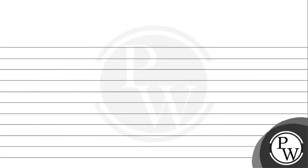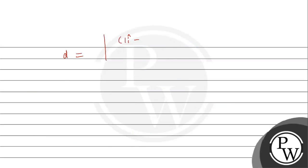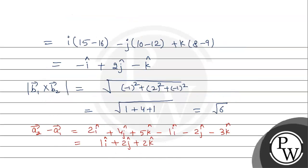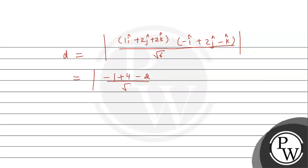Now we can easily find the distance. D = |(A2 − A1) · (B1 × B2)| / |B1 × B2|. Taking the dot product: (1i cap + 2j cap + 2k cap) · (−i cap + 2j cap − k cap) = (1)(−1) + (2)(2) + (2)(−1) = −1 + 4 − 2 = 1. So distance = |1| / √6 = 1/√6.